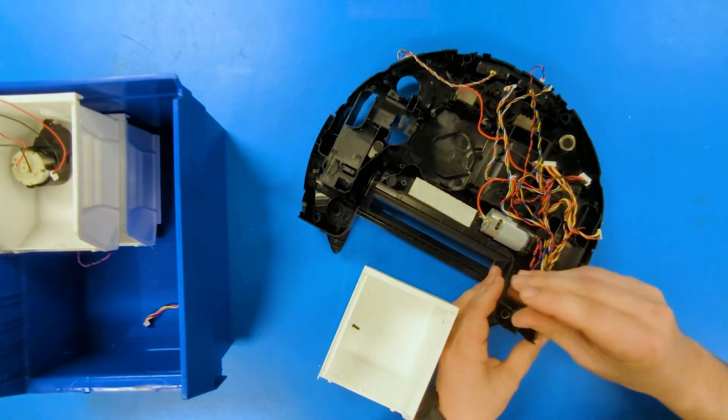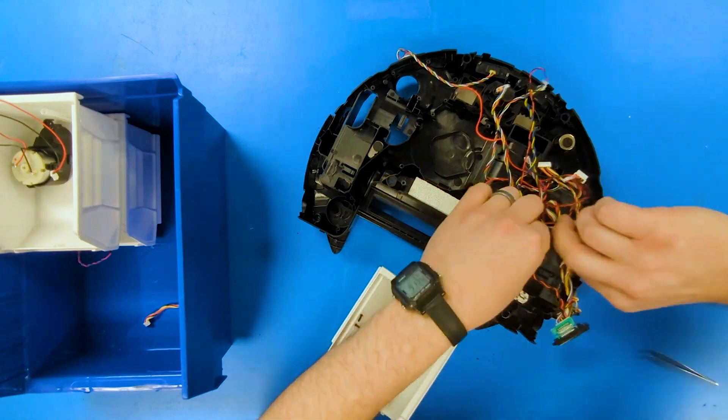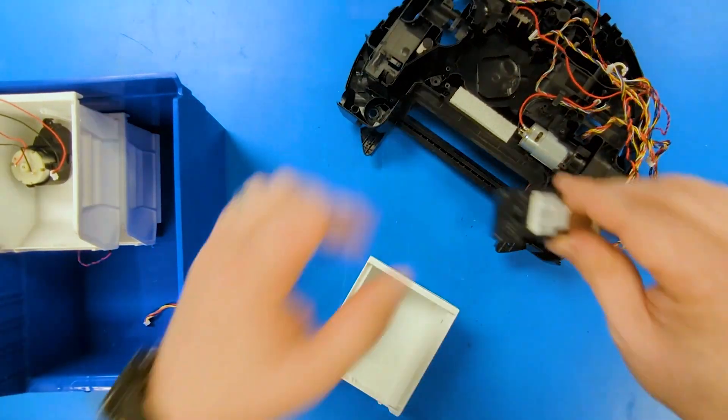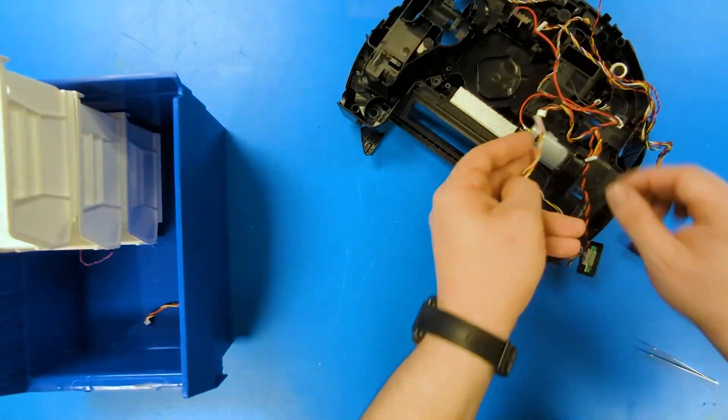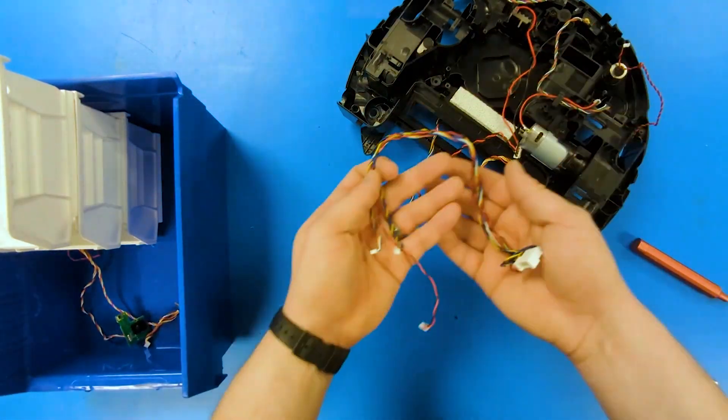Right now we are removing the screws. Get a little closer look at those for a second. A little diaphragm water pump. And that's the level sense and then the bin detect sensor.